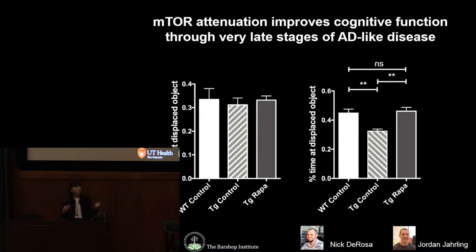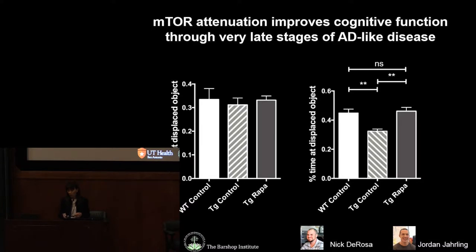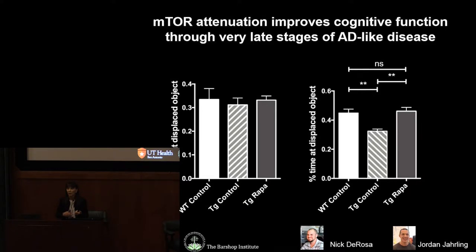These experiments are the latest of many studies by our lab and others, tested in more than four different mouse models of Alzheimer's. However, using a drug like rapamycin attenuates TOR in every cell type of the brain and body. So we used genetic tools — specifically Cre-lox recombination and inducible promoters — to give rapamycin's effect just to neurons.